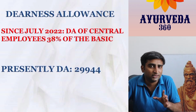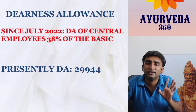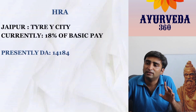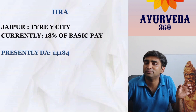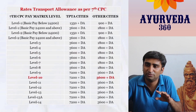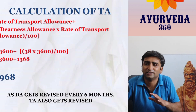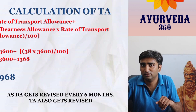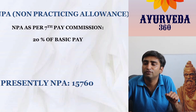For Associate Professor, since the basic is higher at ₹78,800, all basic-linked components increase proportionally. DA at 38% of ₹78,800 is higher; HRA at 18% also increases. TA remains the same regardless of post, as it depends on city and level, not rank. NPA at 20% of ₹78,800 comes to approximately ₹15,760.